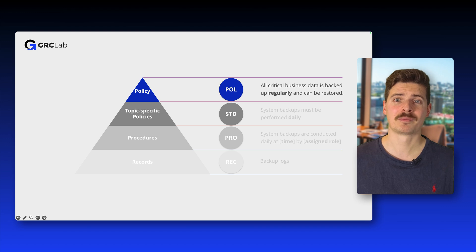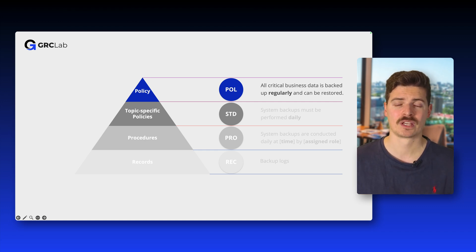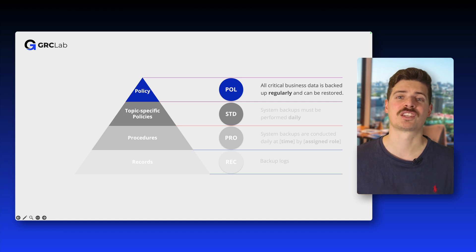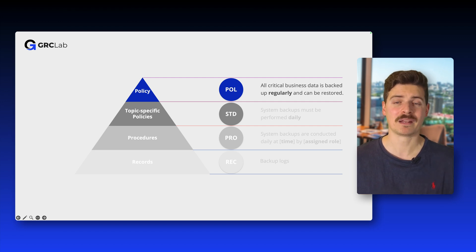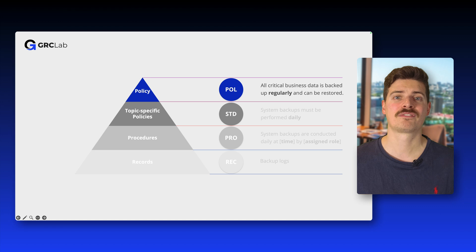At the top of the documentation pyramid is the information security policy. A policy is a high-level document that outlines the organization's intent and objectives regarding a specific topic, usually providing overall guidance without getting into technical details. In ISO 27001, only one policy is explicitly required: the information security policy. This policy sets the foundation for the entire ISMS by defining the organization's commitment to information security, its objectives, and its overall approach to managing risks. For example, a policy might state that all critical business data is backed up regularly and can be restored in case of data loss — clearly defining the intent but not specifying how backups should be performed, how often they occur, or where data should be stored.